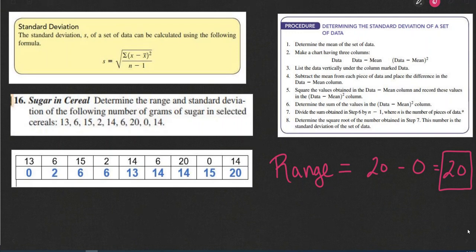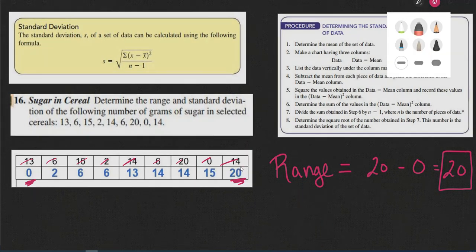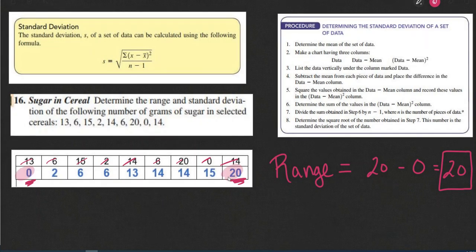Let's look at an example here of sugar and cereal. Determine the range and the standard deviation of the following numbers of grams of sugar in selected cereals. The first step that I took as I'm looking at these different data points is I have put the numbers in order. So you can see they were listed as 13, 6, 15, 2, 14, and so on. I simply rewrote them, putting them in order, starting with the lowest, ending with the highest. And to find the range, what I'll do is I'll subtract the 0 from the 20, and that gives us a range of 20 minus 0 or 20. So we can calculate that the range of this set of numbers is 20.